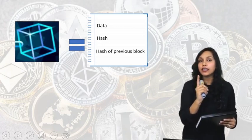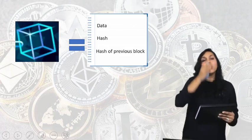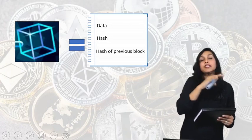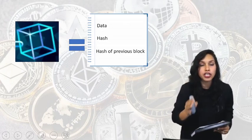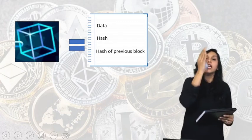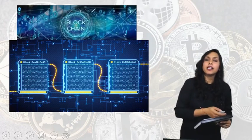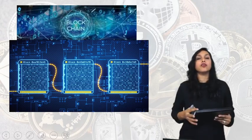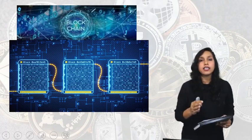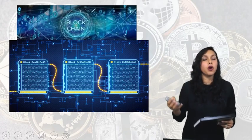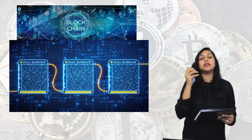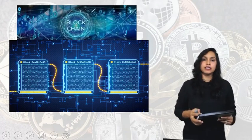The very first block that is created is known as the genesis block. From that block onward, every next block has a connection — a correlation — with the previous block. These are the three details saved in each block. When many such blocks come together, they are called a blockchain. In one transaction there can be crores of blocks, and when these blocks are put together, this is the blockchain technology, which is the main basis of cryptocurrency.